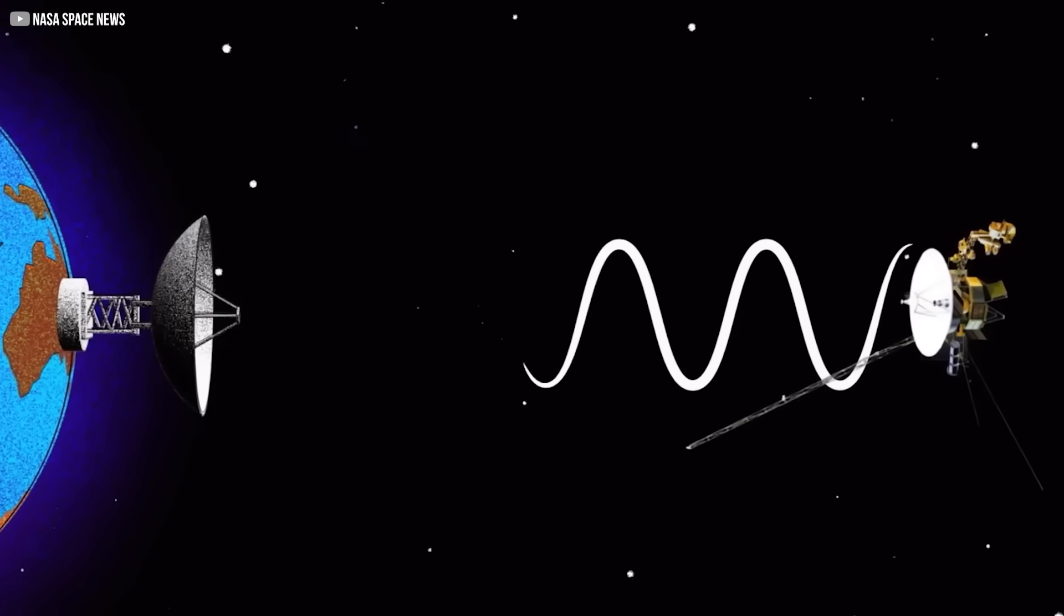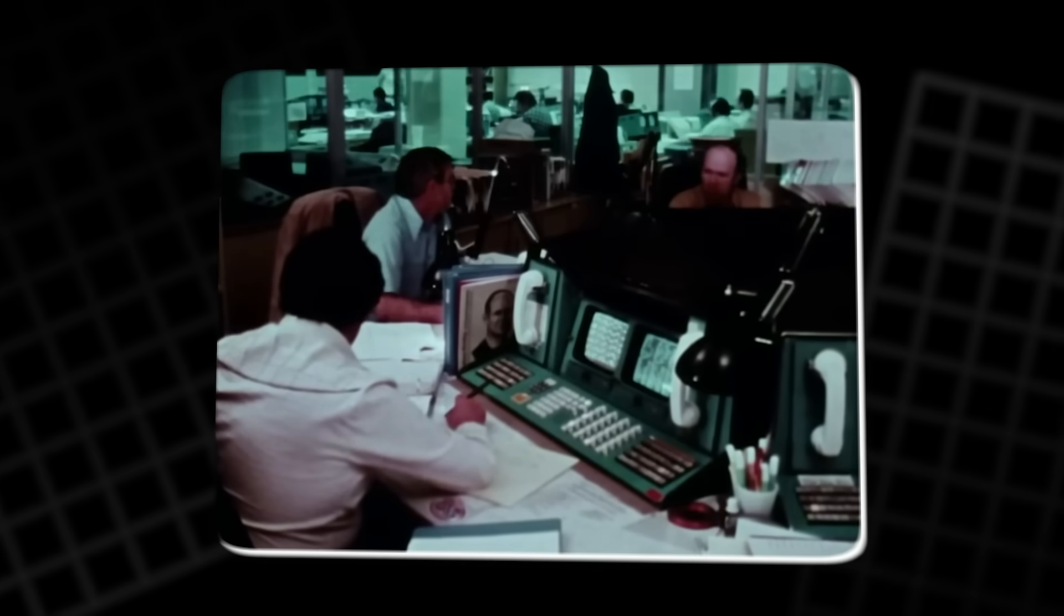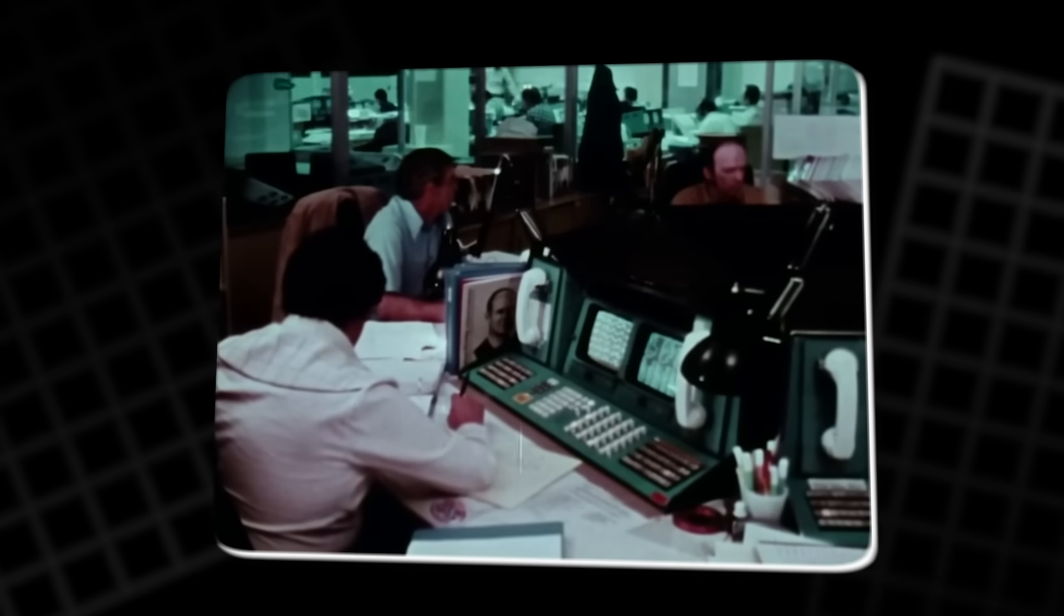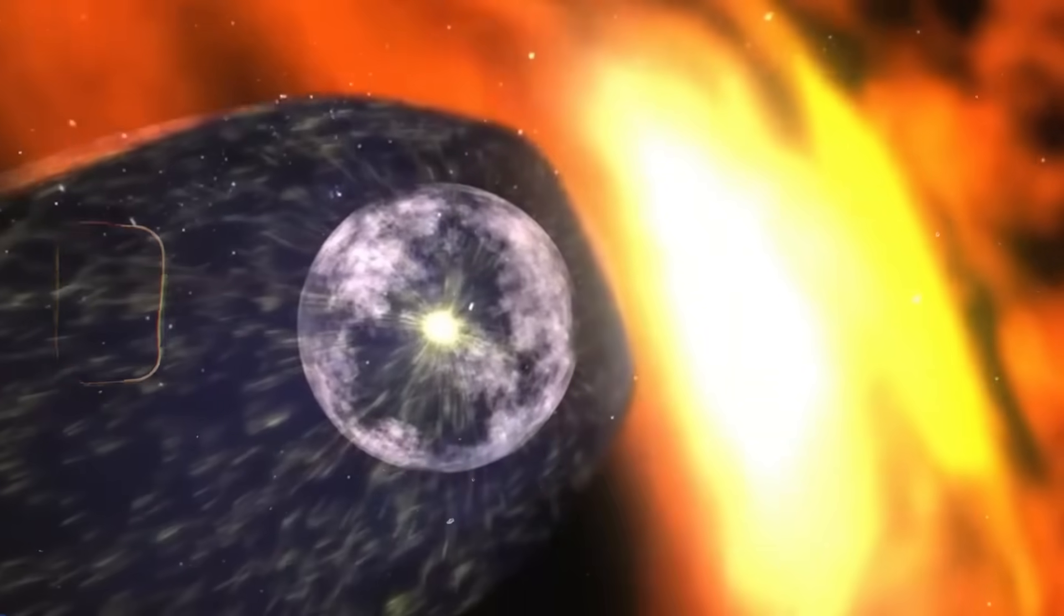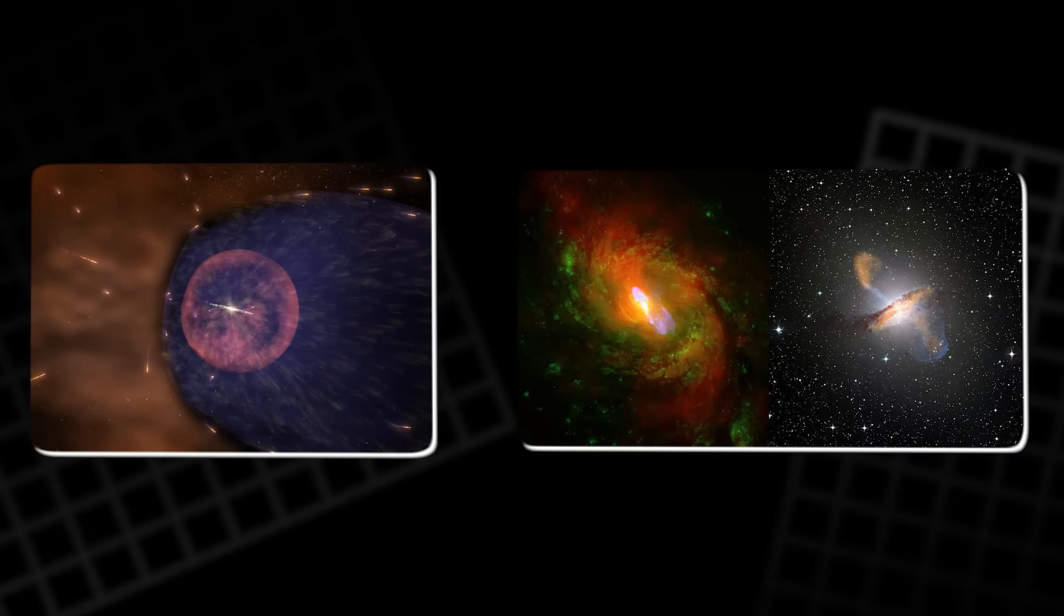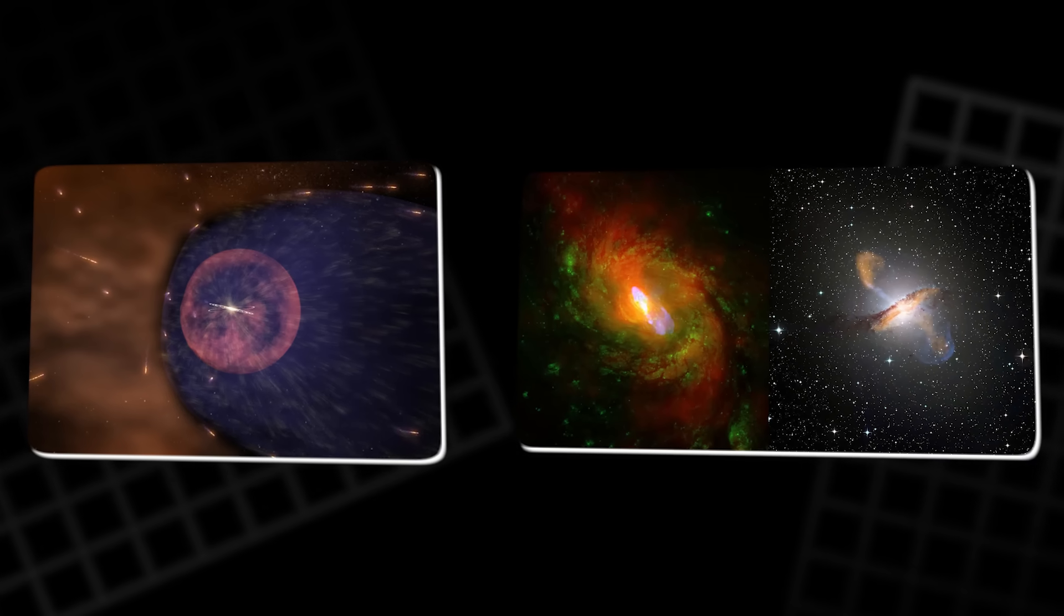Initially, with just Voyager 1's data, some scientists speculated that this alignment might have been a coincidence. However, when Voyager 2 crossed the heliopause and recorded the same magnetic field alignment, this theory was disproven. The two magnetic fields, originating from vastly different sources, one from the Sun and the other from the galactic environment, appeared to be interconnected, suggesting a continuous and more complex magnetic system than previously believed.